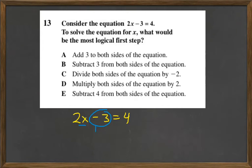I do the opposite operation, so I'm going to add 3, and then I have to add 3 over here. So now it says 2x equals 7.